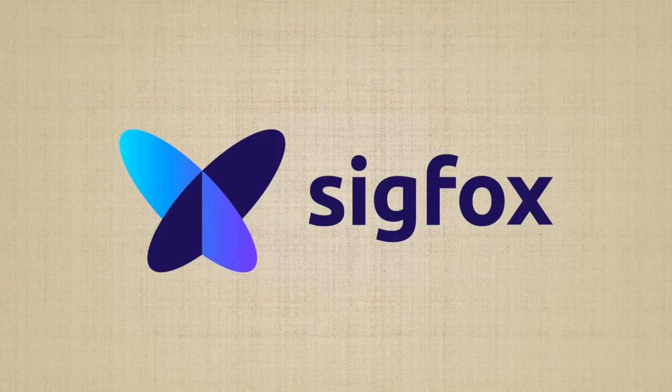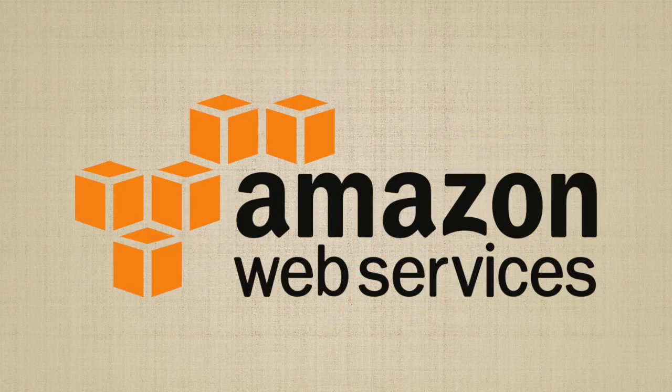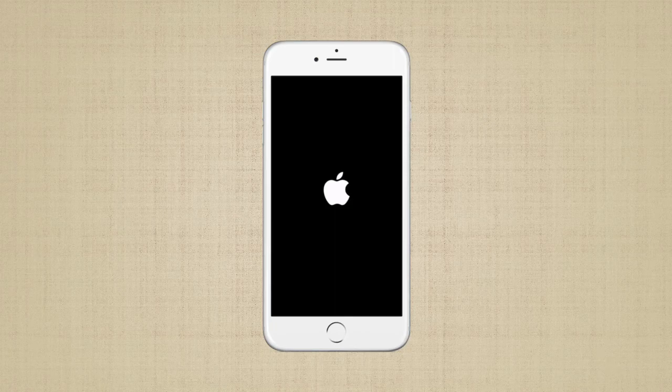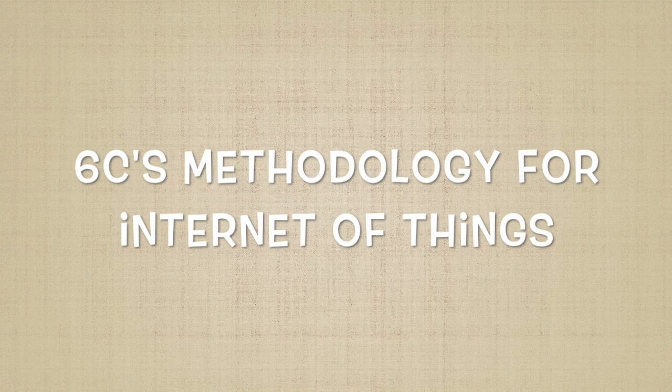Sensors, wireless communication, network connectivity, cloud computing, data analytics, and application. These are known broadly as the six C's of IoT.